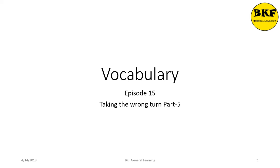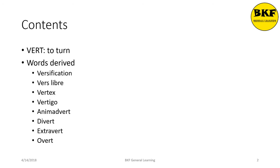Hi guys, welcome back to Vocabulary. This is Episode 15, 'Taking a Wrong Turn Part 5.' In this session we are going to continue with our root word which means 'turn/return,' and these are the words we are going to discuss: versification, vers libre, vertex, vertigo, animadvert, divert, extrovert, and overt.